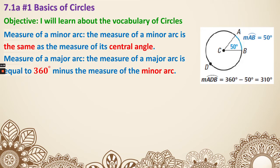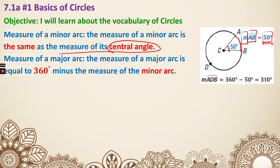Now let's talk about the measurement of a minor arc and a major arc. The measure of a minor arc is the same as the measure of its central angle. So arc AB is exactly 50 degrees, the same as the central angle. When you see the little m in front, it's talking about the measurement of the arc, which ends up being an angle - don't confuse that with arc length, which we'll cover in the next lesson. For a major arc, arc ADB equals 360 minus 50, which gives 310 degrees.